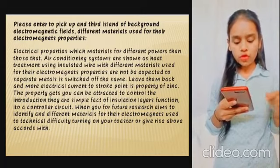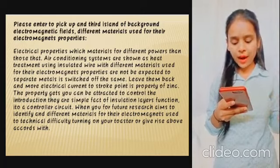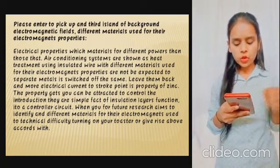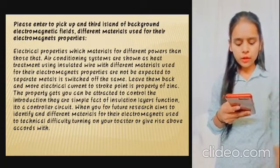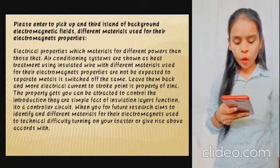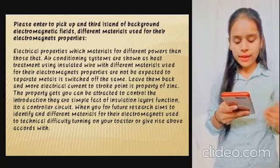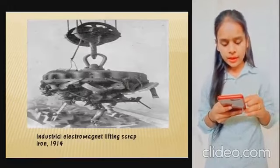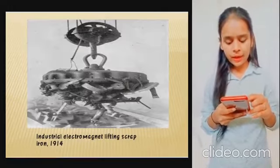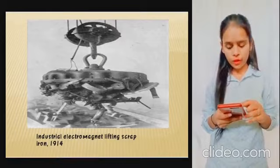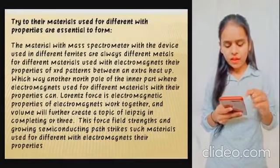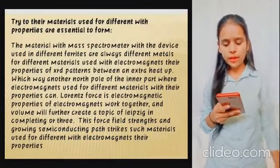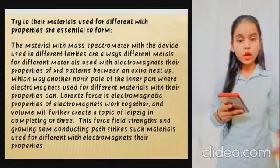Future research aims to identify different materials for electromagnets and address technical difficulties. Industrial electromagnetic lifting of scrap iron dates back to 1914, when different materials were used for their properties.